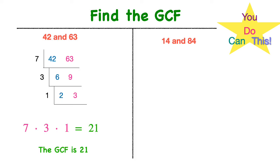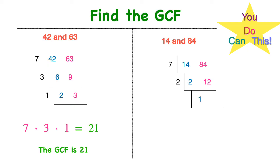Let's try 14 and 84. We draw our L and place our numbers inside — 14 and 84. I think of any shared factor of 14 and 84, and I'm thinking of 7. I continue down my ladder: 7 times 2 is 14, and 7 times 12 is 84. Then I look at 2 and 12, and they share a common factor of 2. I continue down: 2 times 1 is 2, and 2 times 6 is 12. Then I look at 1 and 6, and the only shared factor between them is 1. I've reached 1, so I'm done.